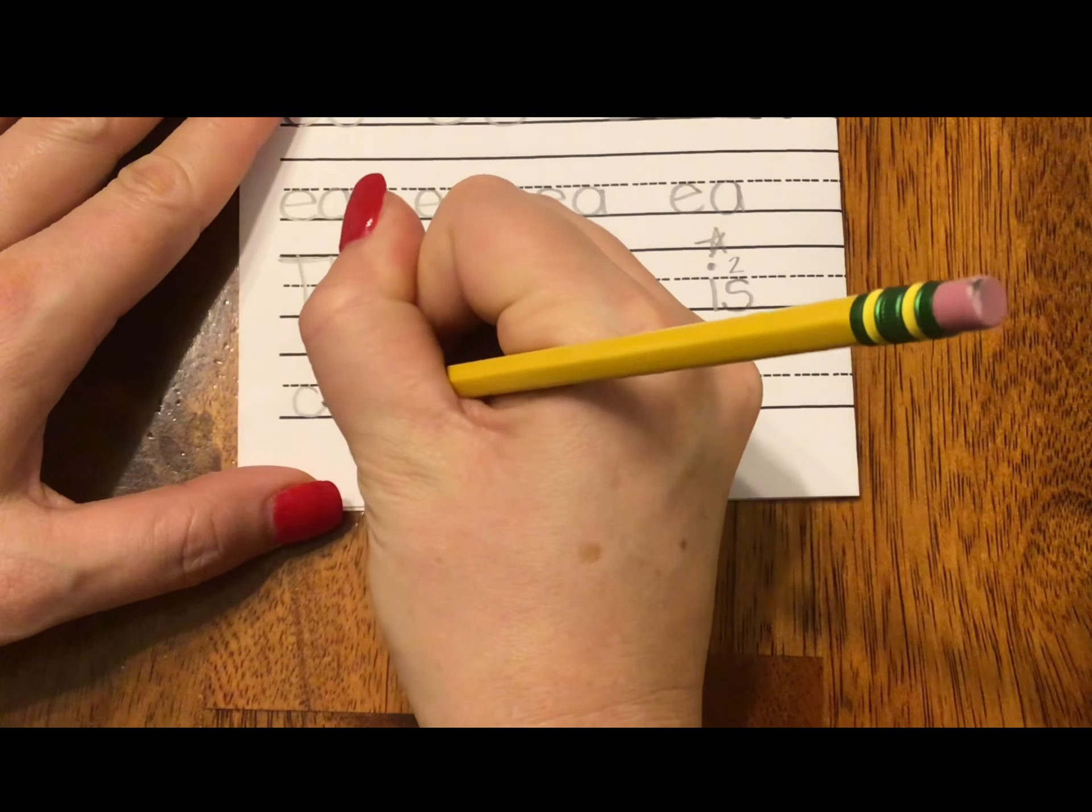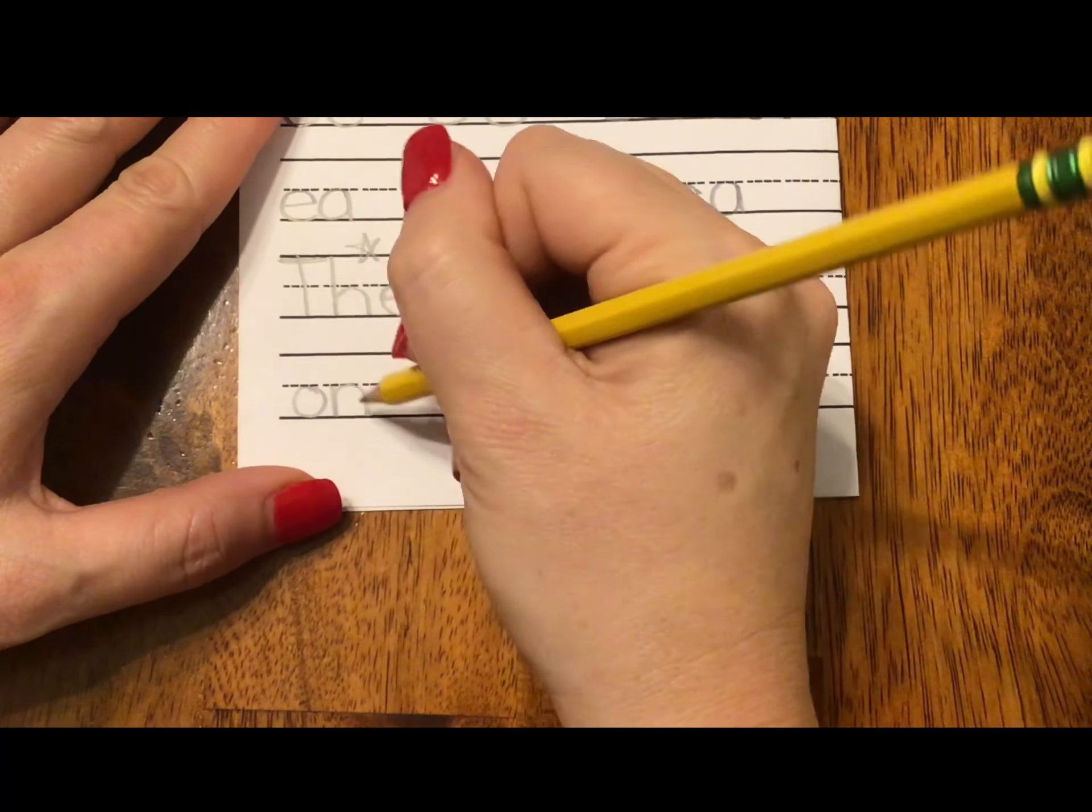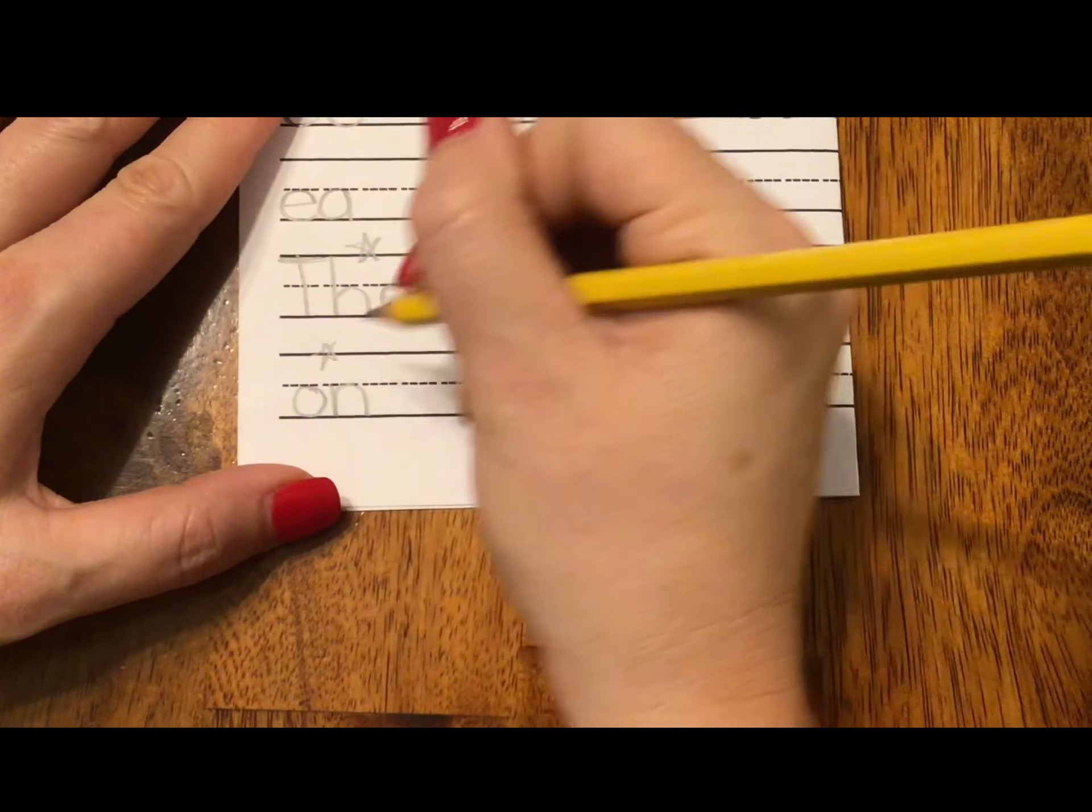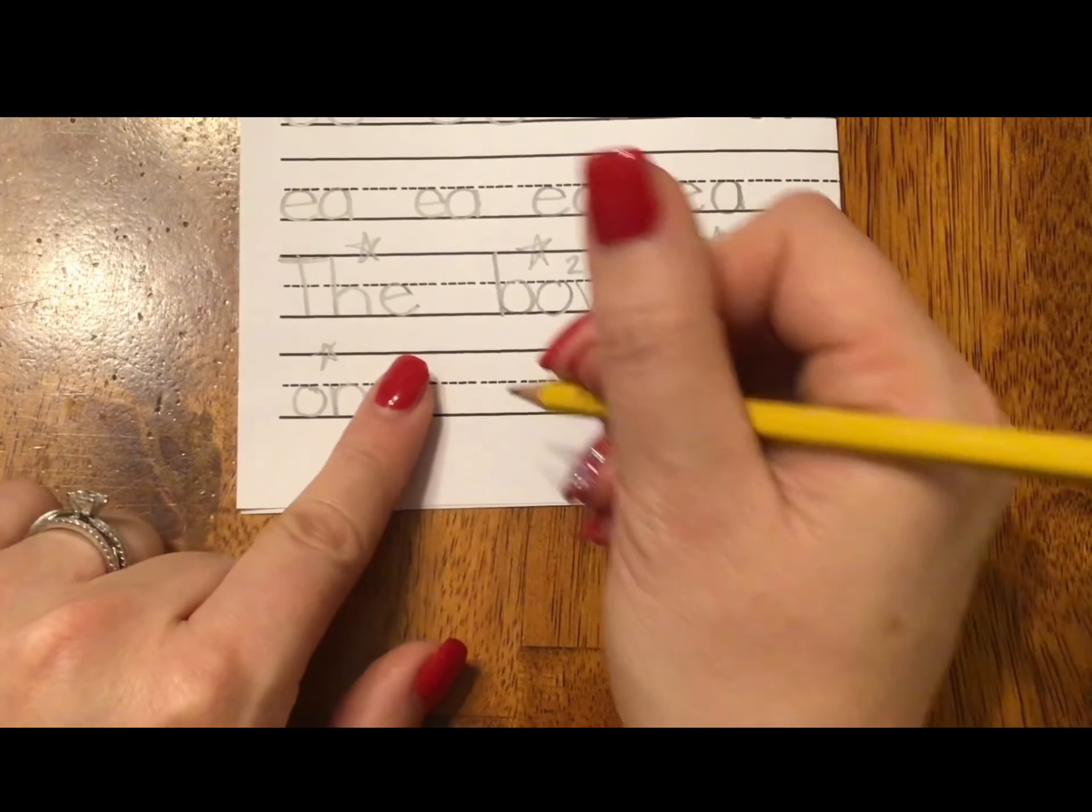The bow is on. Ah. Mmm. If you wrote O and N, on, give yourself a star or a smiley. If not, go ahead and write it now.